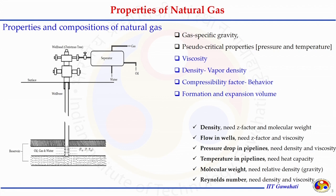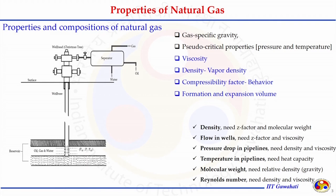The common properties include the composition of the gas, specific gravity, viscosity (needed when flowing any fluid), and the compressibility factor, because natural gas is not an ideal or incompressible gas. Other properties like formation and expansion factors relate the amount of natural gas from one condition to other conditions. For example, to know density we need to know the compressibility factor, making density estimation a tedious job.